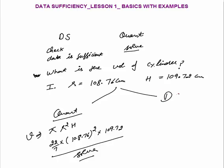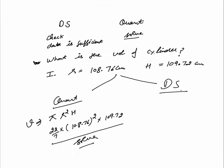Whereas in DS, I know that Volume = π r² h. I know π, I know r, I know h — this data is sufficient to answer the question. I will simply say we know r, we know h, we can always calculate the volume. So this data is sufficient. That is the basic difference between DS and Quant: you only need to check whether the data given is sufficient to answer the question.